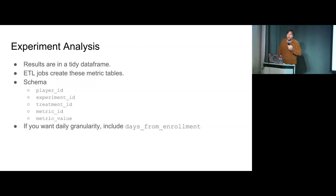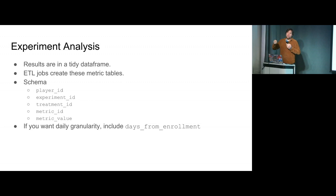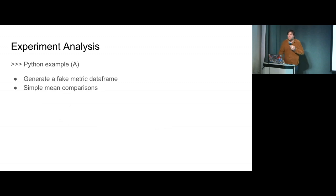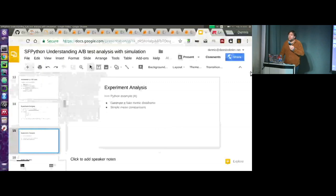In all these examples, the results are going to be a tidy data frame. ETL jobs have already put this into some format with a schema like this: every row is a player ID, what experiment this was, what treatment they were in, what metric we're talking about, and what the value is. Some people also have an intermediate format with a granularity like days from enrollment, but I'll stick with this simpler schema.